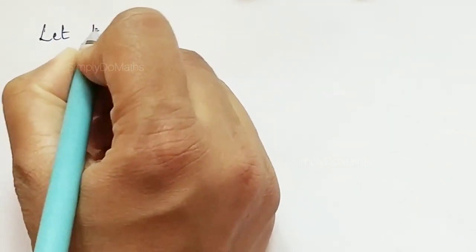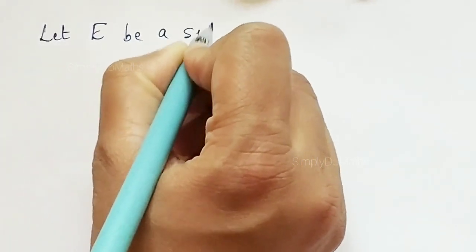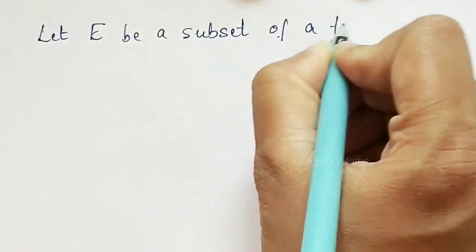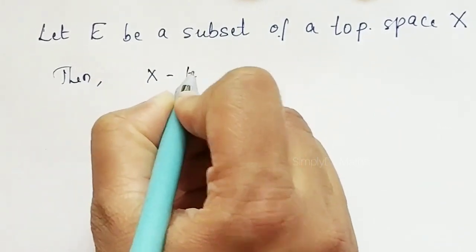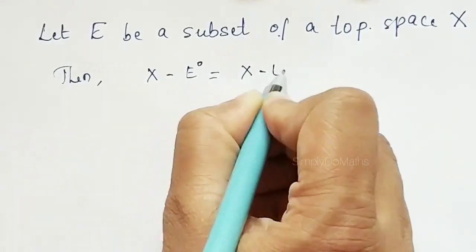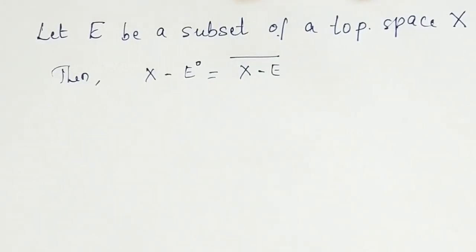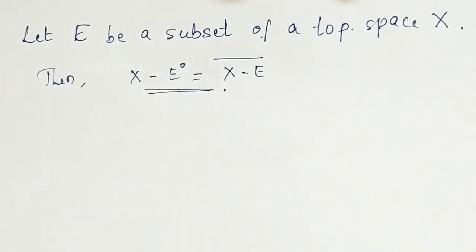Hello everyone. Today let's learn about one of the important properties relating closure and interior in a topological space. Let capital E be a subset of a topological space capital X. Then, X minus interior of E will be equal to closure of X minus E, which is very important from the concept of a topological space.